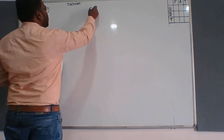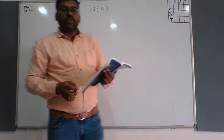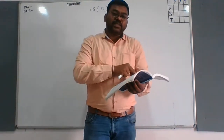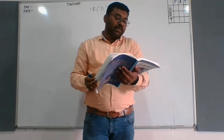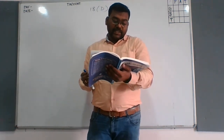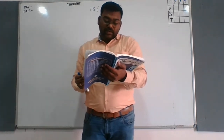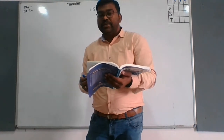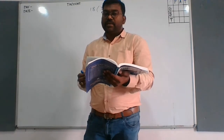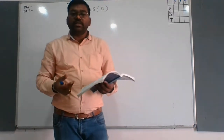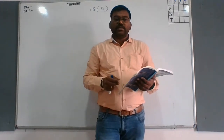So using all those basic concepts, in this exercise 18D we are going to learn to construct quadrilaterals for given combinations. There are various types of combinations: when four sides and one angle are given, when three consecutive sides and two included angles are given, when four sides and one diagonal are given, when three sides and two diagonals are given, and when two adjacent sides and three angles are given. There is also construction of squares, rectangles, and parallelograms.